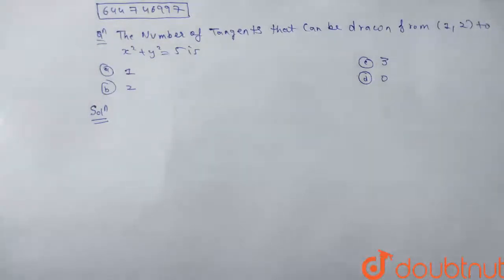When you face this type of question where you have to find the number of tangents that can be drawn from a point to a given circle, the first step is to find the location of the point with respect to the circle, and the question will be solved.